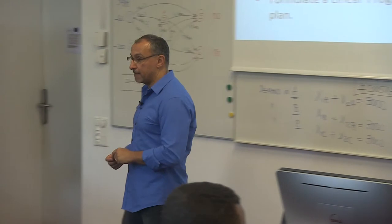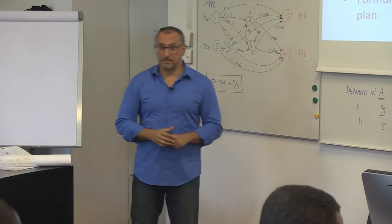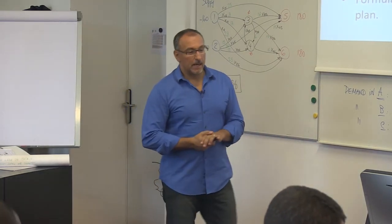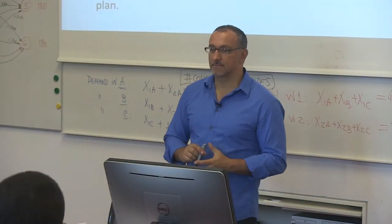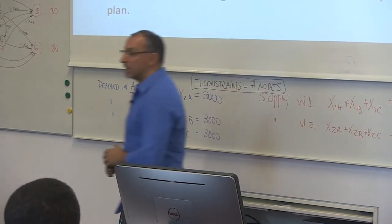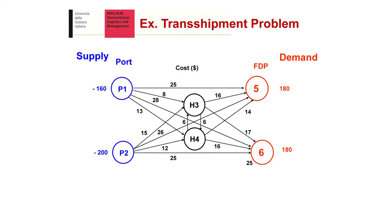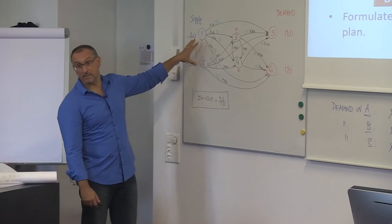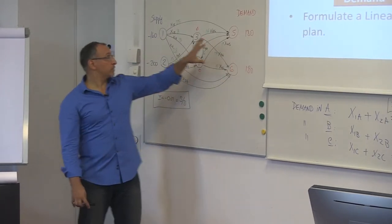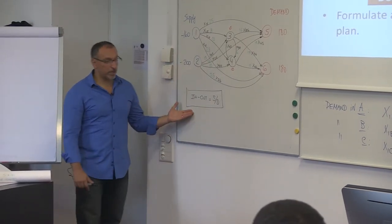And then we have to think about constraints. So question: how many constraints do we have? Very good, Guy. We have as many constraints as the number of nodes. How many nodes do we have? Oh, it's numbered, so that's easy. So six constraints.